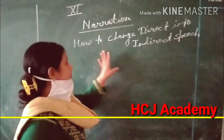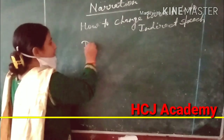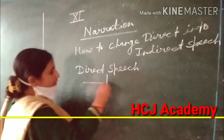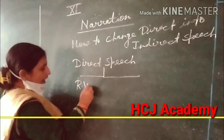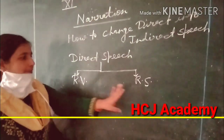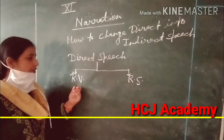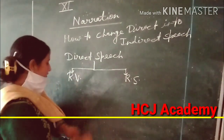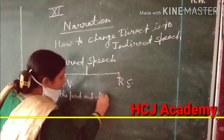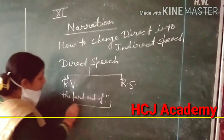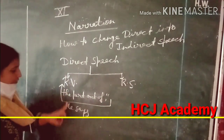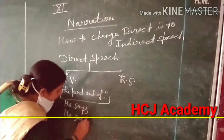Before starting the topic, we should know that in direct speech there are two parts. The first part is the reported verb and the next part is the reported speech. The part outside the inverted commas is known as the reported verb — for example, 'he says' or 'he said' — that is the reported verb.